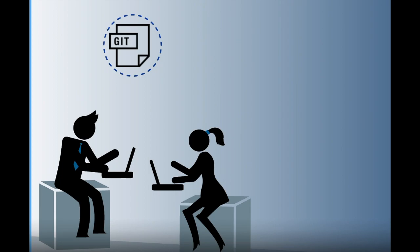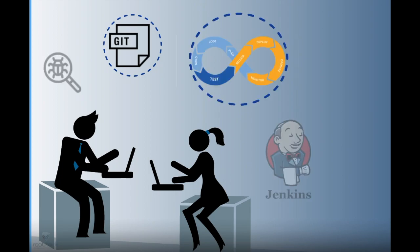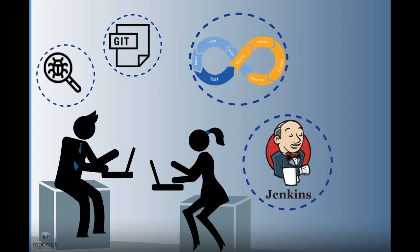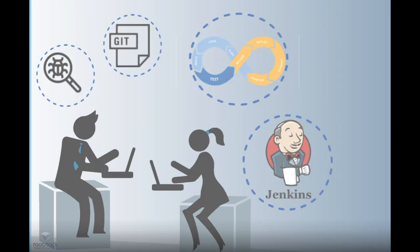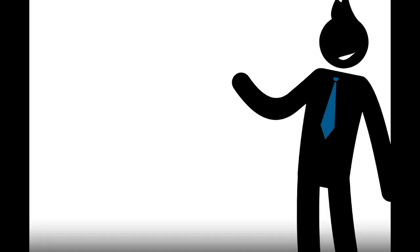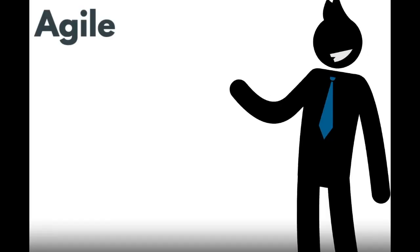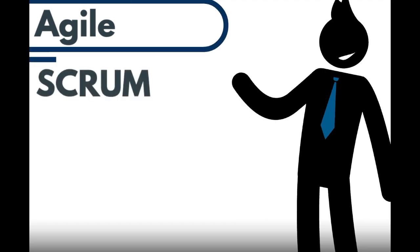When it comes to having a collaborative environment, we often refer to Git, CI/CD, testing, Jenkins, and debugging. For methodology, we often want to be agile, Scrum, and waterfall.